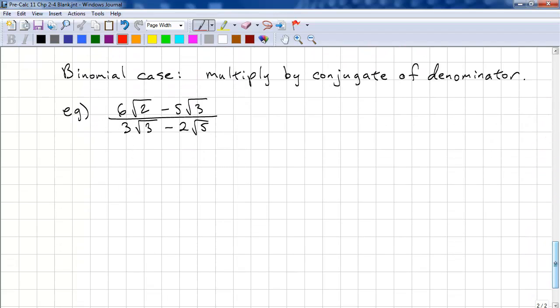Okay, the binomial case. We need to multiply by the conjugate of the denominator. So, we have 6 root 2 minus 5 root 3 over 3 root 3 minus 2 root 5. We need the conjugate of the denominator. That means we keep the same first and second term and change the sign. So, that's 3 root 3 plus 2 root 5.